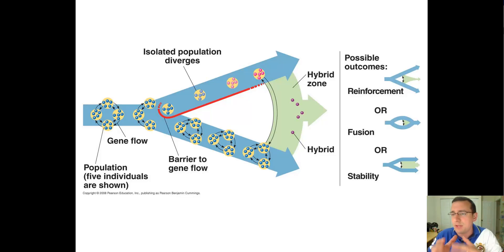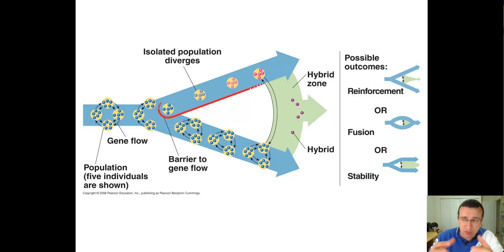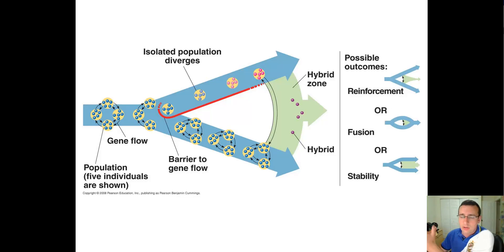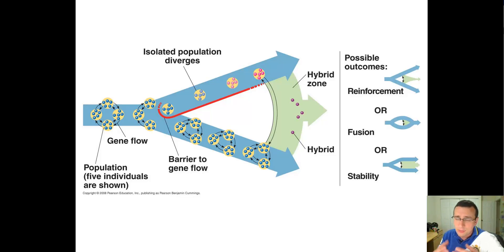Each one of those things we talked about in the microevolution lecture series — if those things happen independently, separately, in each of the separated groups, that is what's ultimately going to, over time, as those changes accumulate, change the differentiation between the groups and then the formation of different species. Remember, in order for this to happen, you have to have isolation.